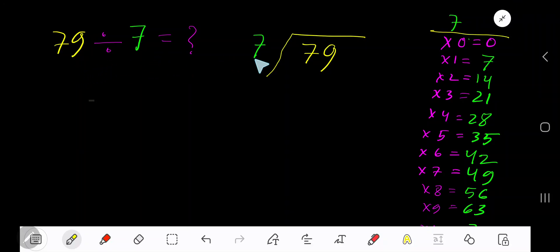79 divided by 7. Here, 7 is the divisor, so we need the multiplication table of 7. 7 times 0 is 0, 7 times 1 is 7, 7 times 2 is 14, 7 times 3 is 21. To find the multiplication table of 7, just add 7 to the previous step: 0 plus 7 is 7, 7 plus 7 is 14, 14 plus 7 is 21.